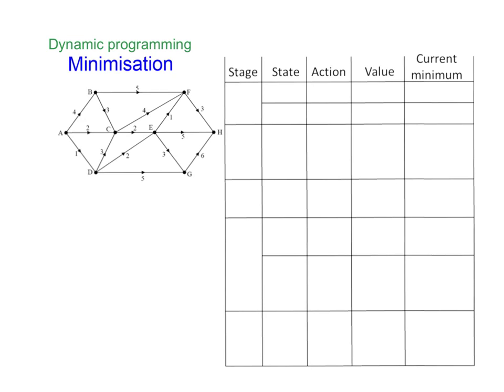In this video we're going to be looking at solving a minimization problem using dynamic programming. We've got this network here and what we're looking to achieve is to get from A over here to H, and we want to go along the minimum weighted edges in total as we go through.